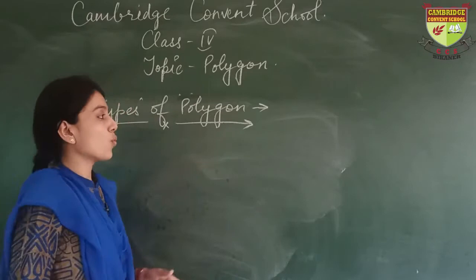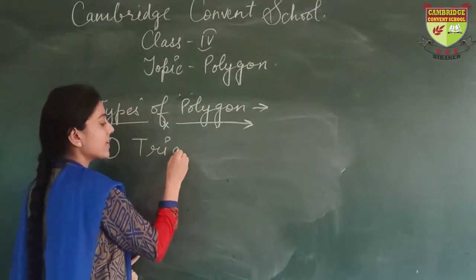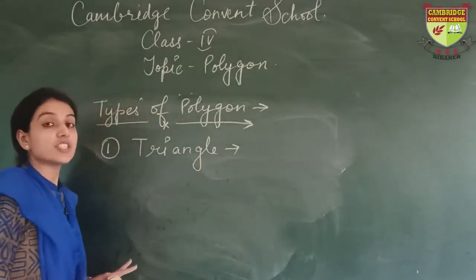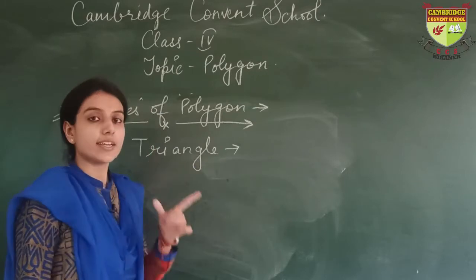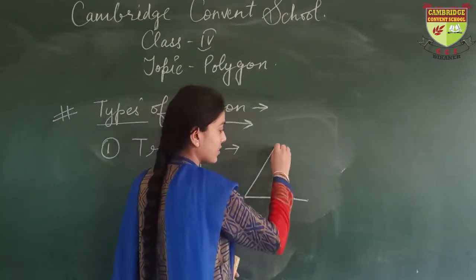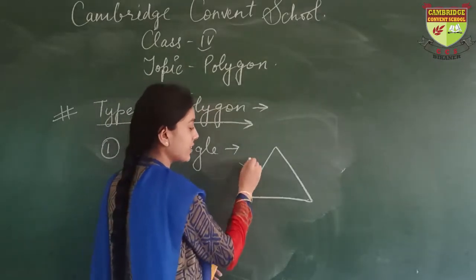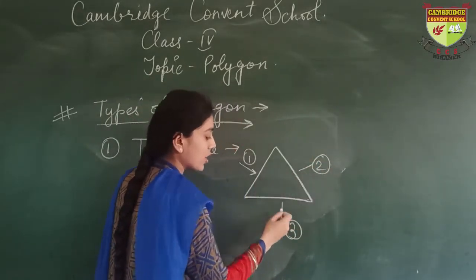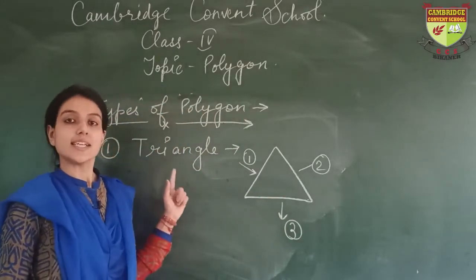The first type is triangle. A figure which has 3 sides is known as a triangle. Here you can see side 1, 2, and 3. So a figure which has 3 sides is known as a triangle.